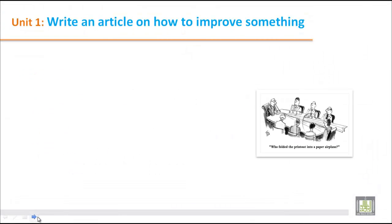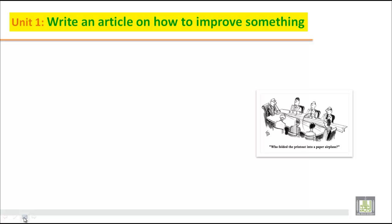This is how we can write an article on how to improve your conversational skill. Conversational skill means how to talk. Students often have problems — if they are asked to talk in English with their friends or with strangers, they face problems. So you have to give ideas on how to improve your conversational skill. Let us practice writing an article on this topic.